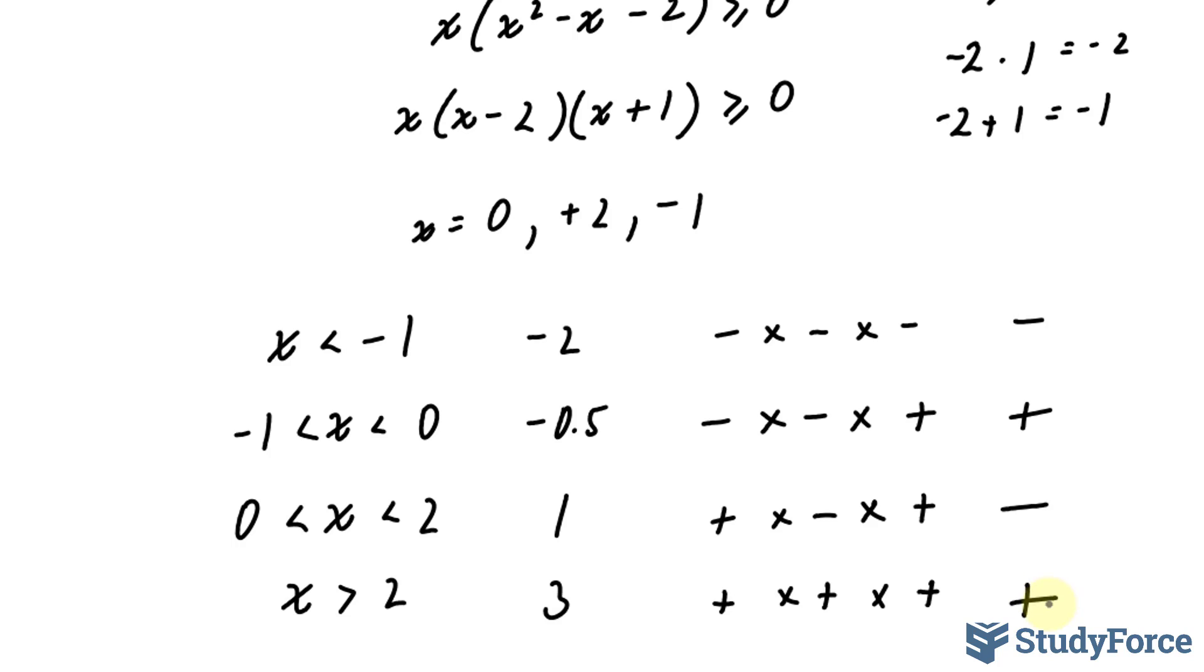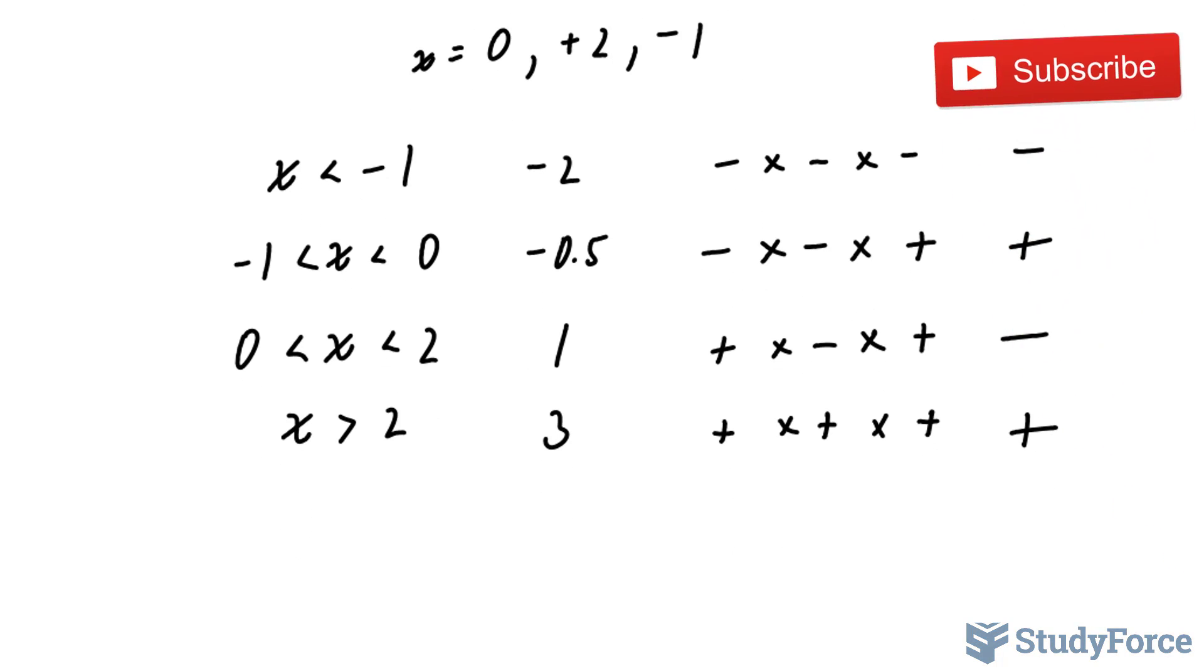Therefore, our function will be positive between negative 1 and 0 and positive when x is greater than 2. To document that, we can write it out like this, where x is between negative 1 and 0, and x is greater than 2.